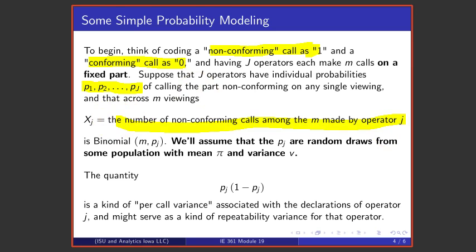If we count up the number of times that operator j calls the part non-conforming, we might very well think of using a binomial distribution to model that count X_j.